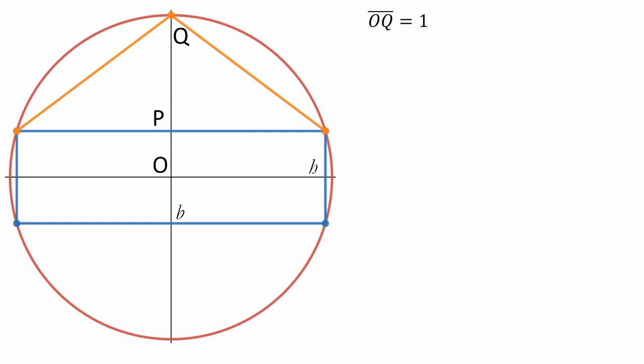Therefore, OQ is equal to 1, and OP is equal to one-half the height of the rectangle, or h over 2. This means that PQ is equal to 1 minus h over 2, and this is the value of the height of the isosceles triangle.